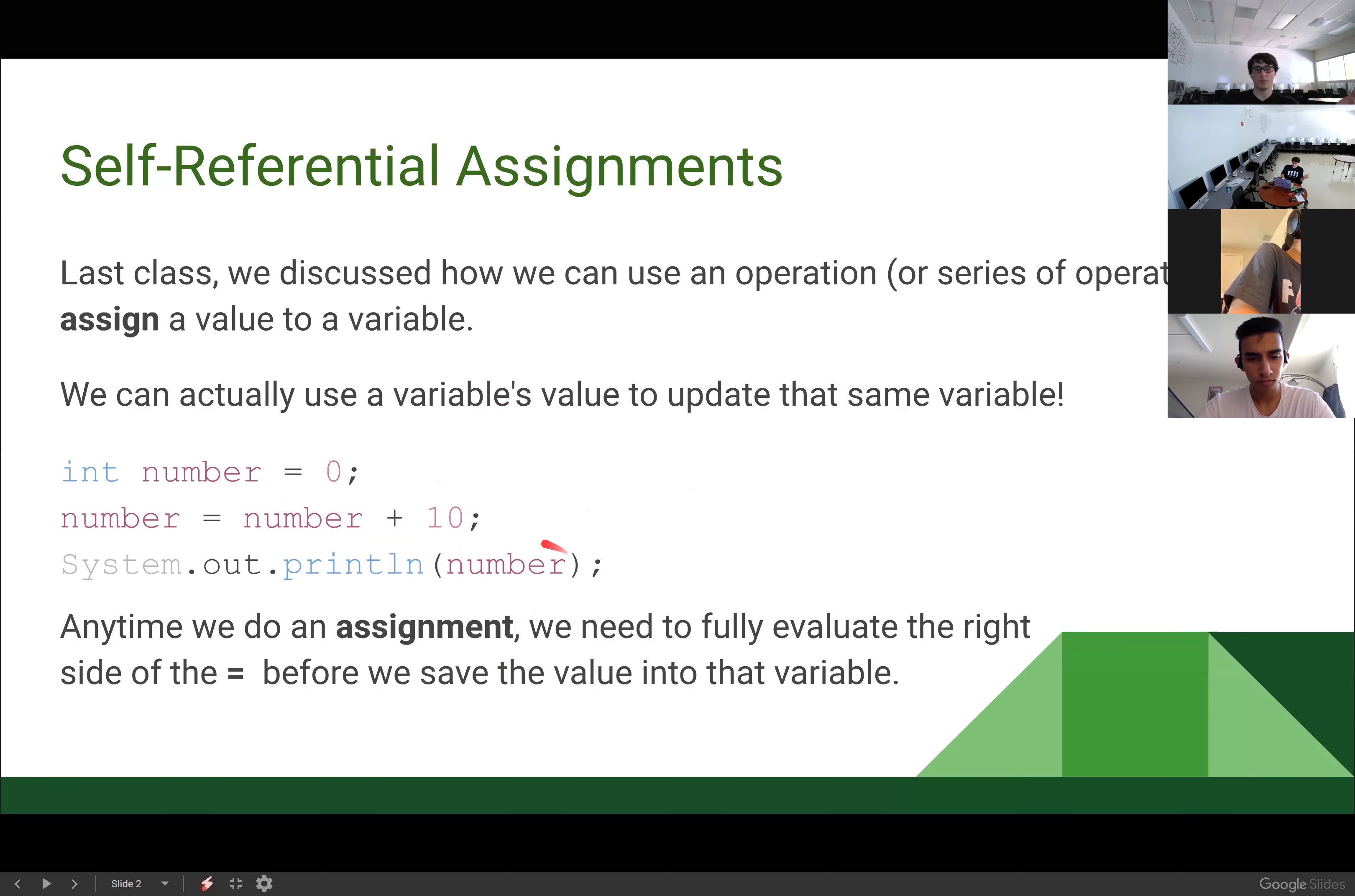So here we've got our number, got our box with number, our name number, it's storing the number zero. What I want to do is I want to say number plus 10. So currently, number equals zero, so I'm getting zero plus 10. Easy, that's just 10. Now that I have a specific value, I can assign that value to a variable number. And it's going to overwrite the zero that was there initially.